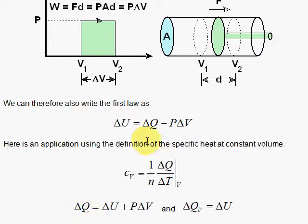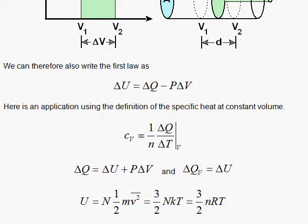The change in heat is equal to the change in energy plus P dV. Since the change in heat is taking place at constant volume, delta V is zero, and delta Q then is going to equal delta U. Now we know what U is for the ideal gas, so we will calculate for the ideal gas.